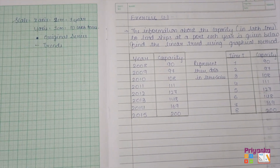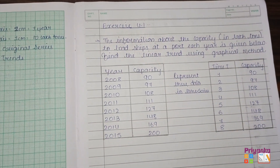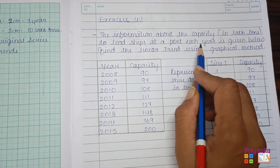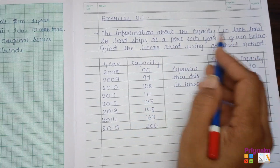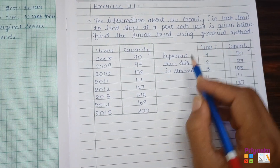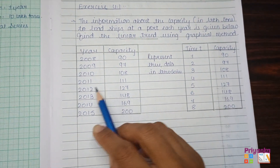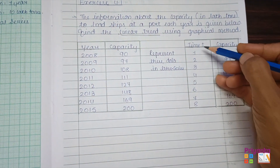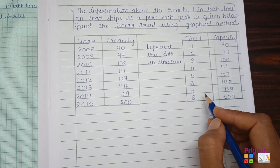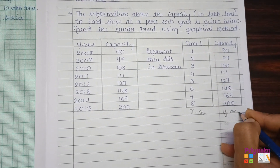Exercise 4.1, page number 164, from Chapter 4: Time Series. We start with the first graphical method. In the question, information is given about the year and the capacity. To represent this data in a time series, give the ascending numbers in ascending order, and copy the corresponding capacity values. The time variable — the independent variable — is kept on the X-axis, and capacity — the dependent variable — is kept on the Y-axis.